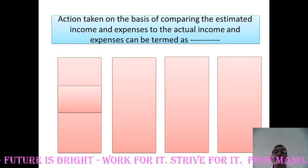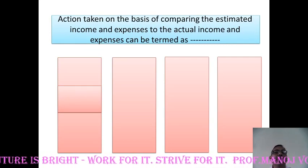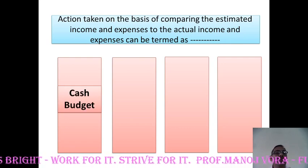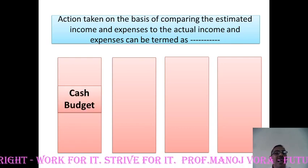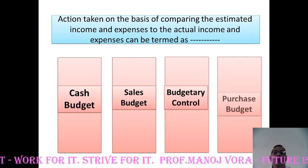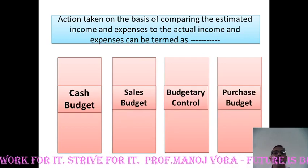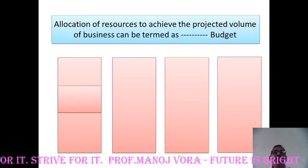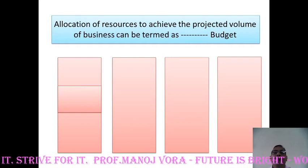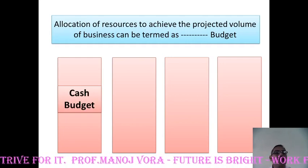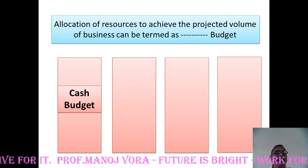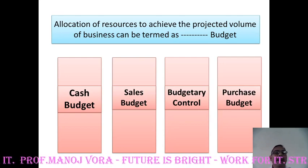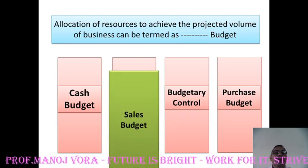Action taken on the basis of comparing the estimated income and expenses to the actual incomes and expenses can be termed as — cash budget, sales budget, budgetary control, or purchase budget. Your answer has to be budgetary control. Allocation of resources to achieve the projected volume of business can be termed as dash budget — cash budget, sales budget, budgetary control, or purchase budget. Your answer has to be sales budget.